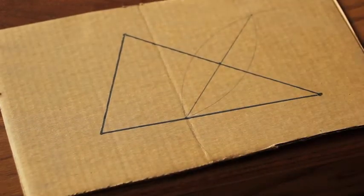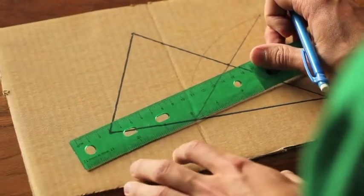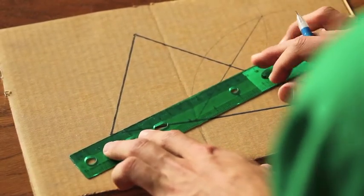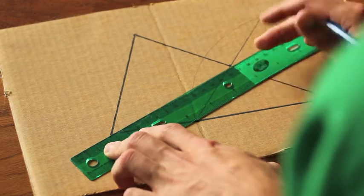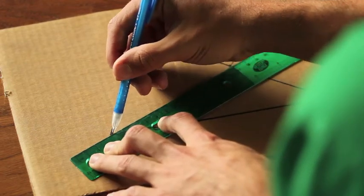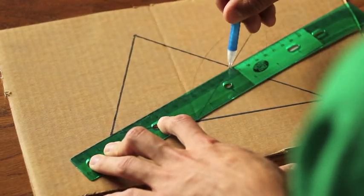To finish off the median, we connect that point to the vertex of the opposite side. And we now have one of the medians.